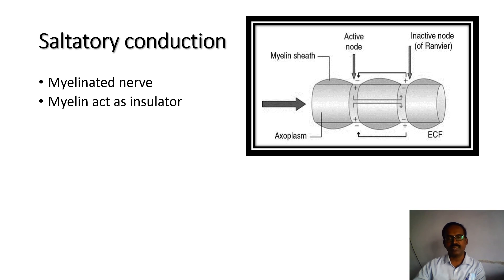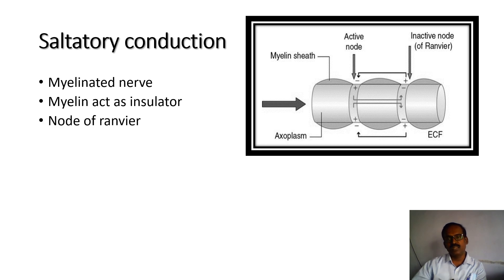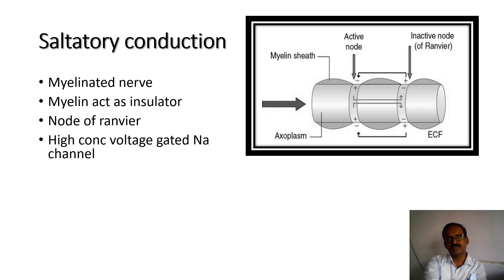Saltatory conduction is only occurring in the myelinated nerve fibers. The node of Ranvier contains a greater number of voltage-gated sodium channels, and it has no covering of the myelin sheath.